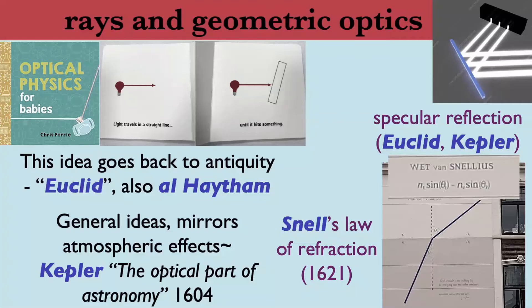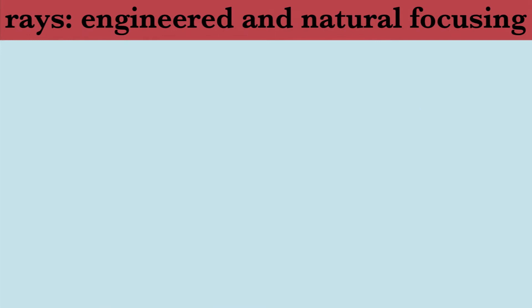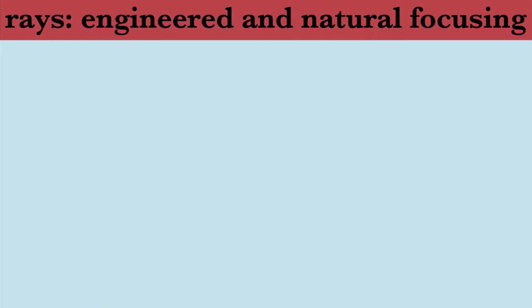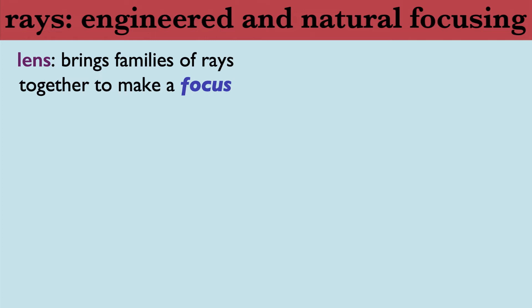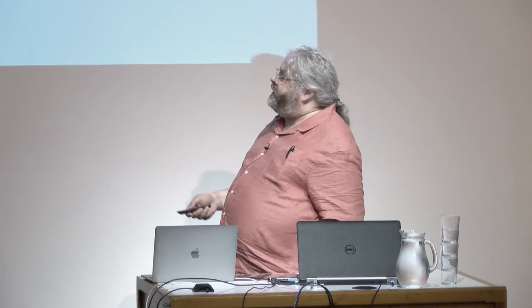We don't really get rays by themselves — a light beam is a family of rays, or sometimes called a bundle of rays. Through a lens, which has been carefully designed to control refraction at each interface, all of these parallel lines converge to a focus. That's the basic fact of image-making. It requires a lot of engineering to design a lens that gets all the rays to come together at a single point, but that is the basic idea behind spectacles, telescopes, and microscopes.